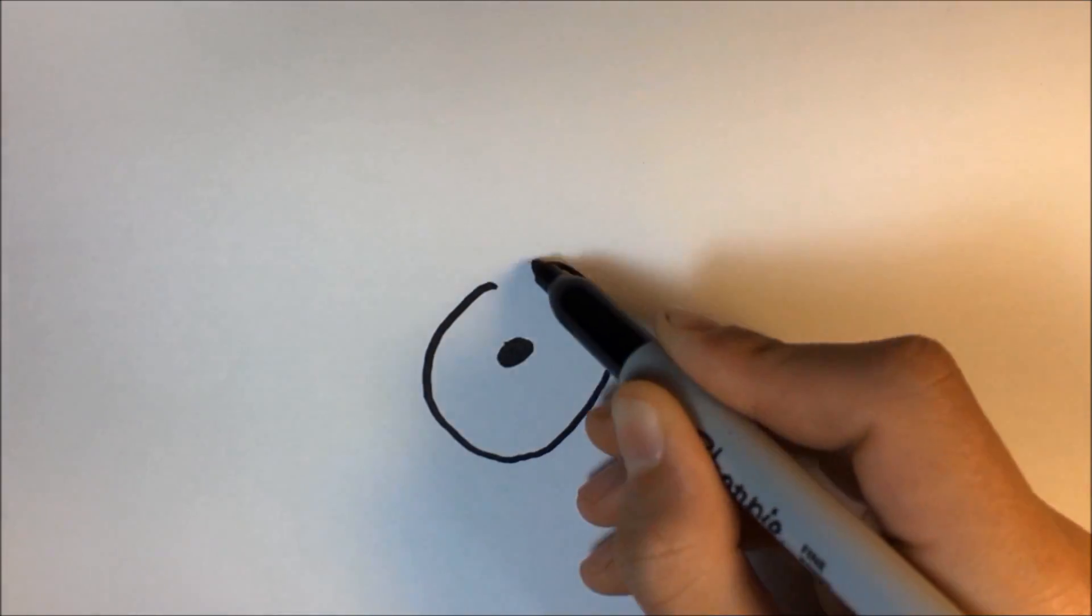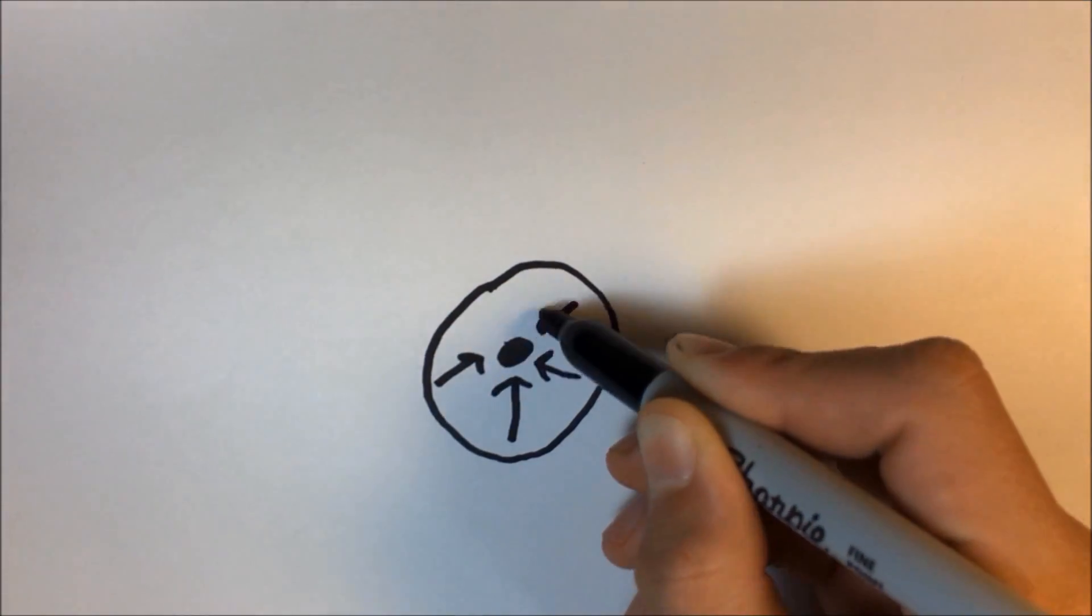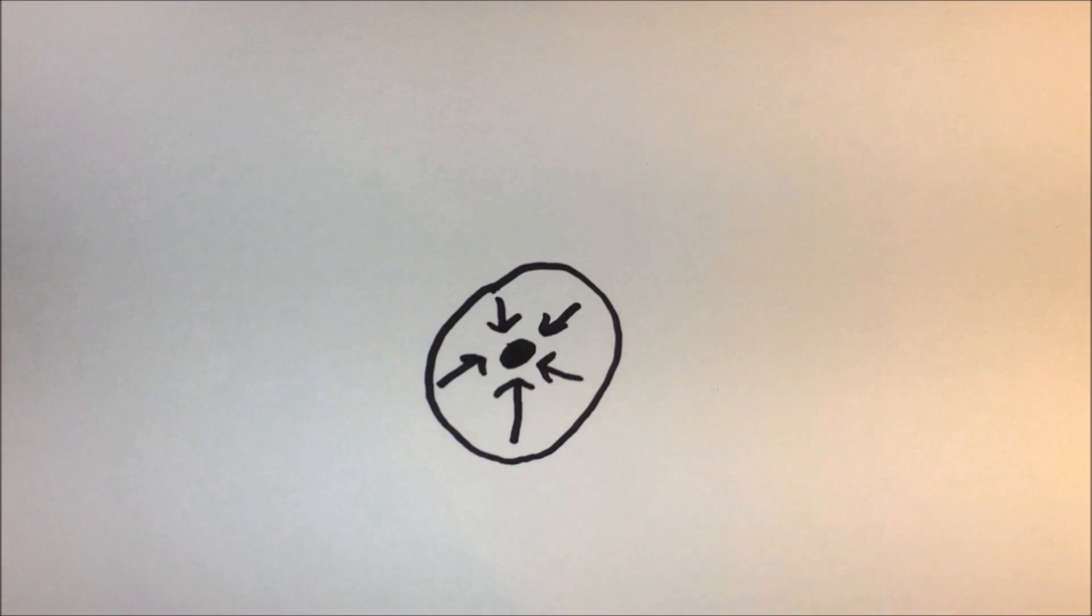Around the singularity is a ring called the event horizon. This is how far out the gravitational pull of the black hole extends so that nothing can escape it past this point.